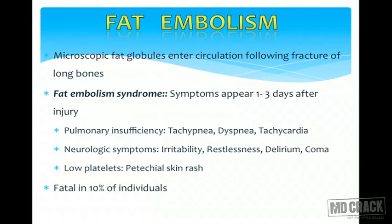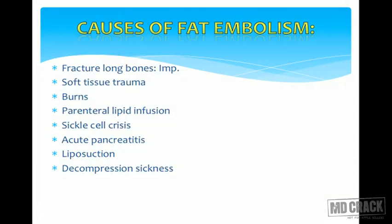Fat embolism is quite rare, and microscopic demonstration is diagnostic. It usually occurs one to three days after injury. Patients develop pulmonary insufficiency with tachypnea, dyspnea, and tachycardia, especially post-operatively after long bone fractures. They may also develop neurogenic symptoms like irritability, restlessness, delirium, coma, and low platelets with skin rashes. Fat embolism is fatal in 10% of cases. Important causes include fractures of long bones, soft tissue trauma, burns, parenteral lipid infusion, sickle cell crisis, acute pancreatitis, liposuction, and decompression sickness.